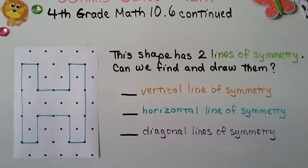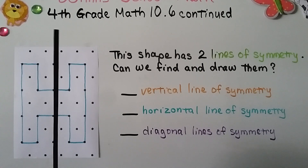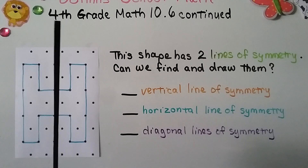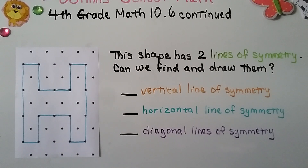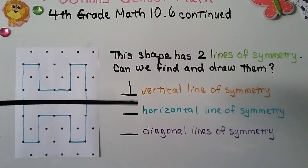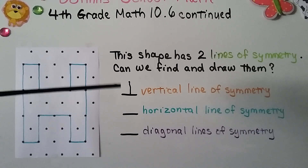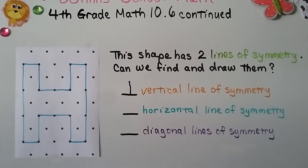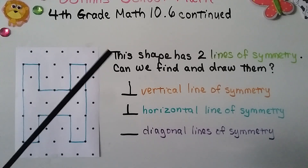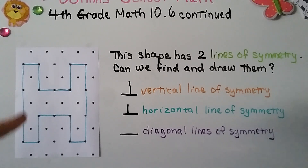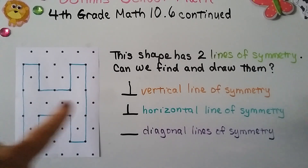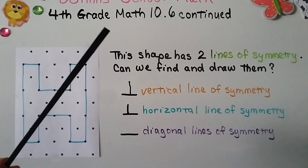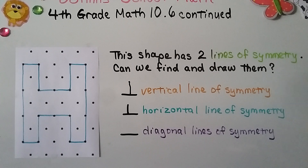This shape has two lines of symmetry — let's find and draw them. We can draw a vertical line of symmetry, where this side is a mirror image of that side. We can also draw a horizontal line of symmetry — folding on that line, the top part folds perfectly over the bottom to make a mirror image. It has no diagonal lines of symmetry because the shape is much taller than it is wide and would not fold perfectly.